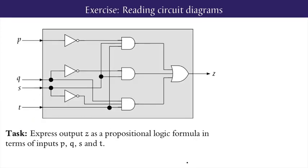Now, it's your turn to try an exercise. Consider the following combinational circuit with four inputs, P, Q, S, and T, and one output Z. Your task is to read off or extract a logic formula for the output to express it in terms of the inputs.